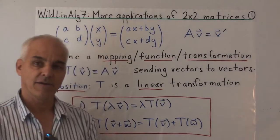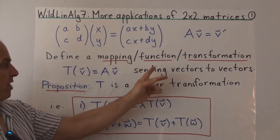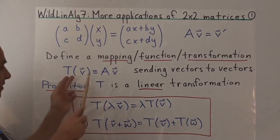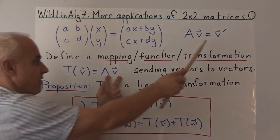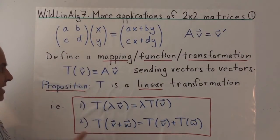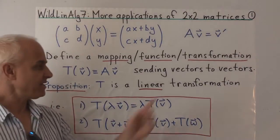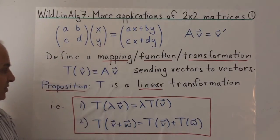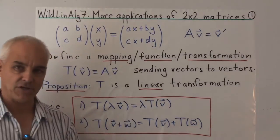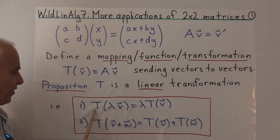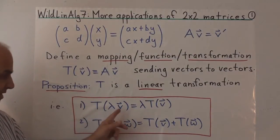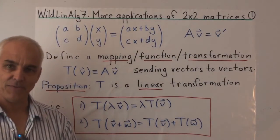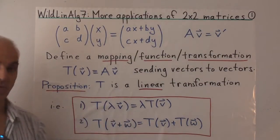We can use this matrix multiplication on a vector to define a mapping, or transformation, T of V. We're thinking of this as an input-output situation: inputting V and outputting V prime, which is A times V. That defines a transformation T which sends vectors to vectors. An exercise from last time is to convince yourself that this transformation is in fact a linear transformation.